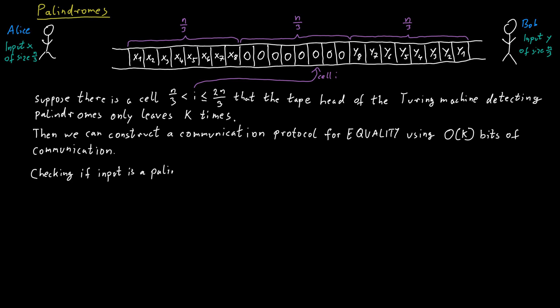As you can see, this input will be a palindrome if and only if x equals y — that is, only if x₁ equals y₁, x₂ equals y₂, and so on. So by deciding whether this particular input is a palindrome or not, we are actually also deciding whether x equals y.